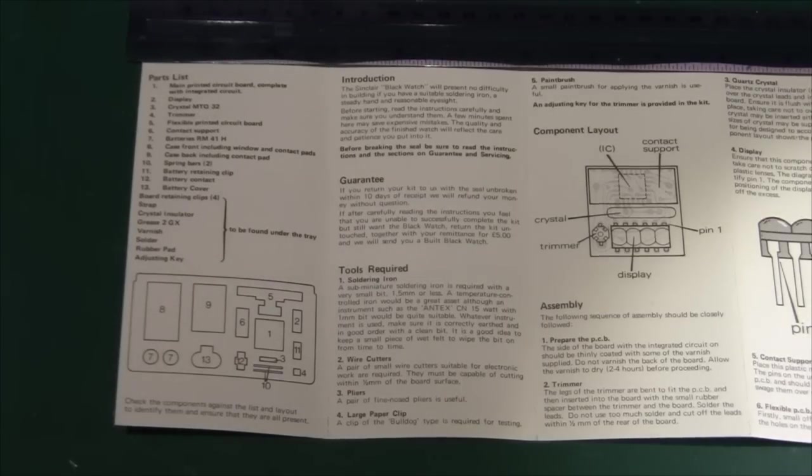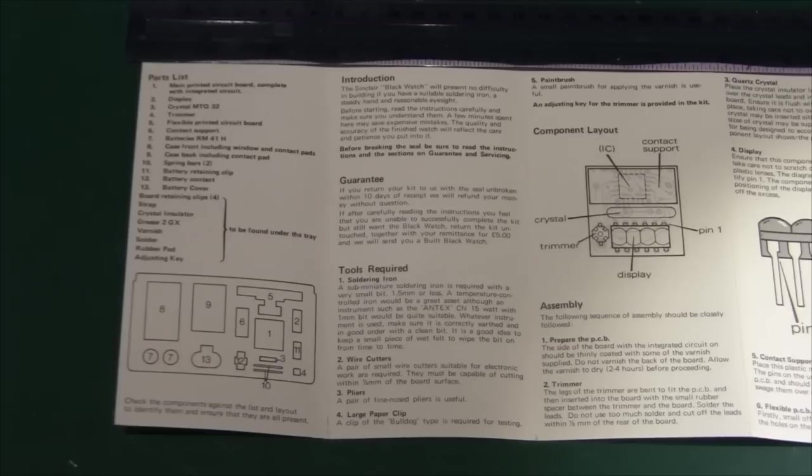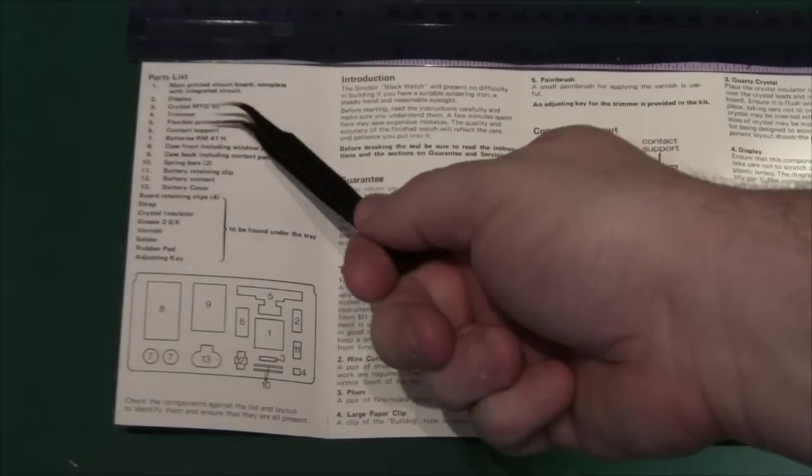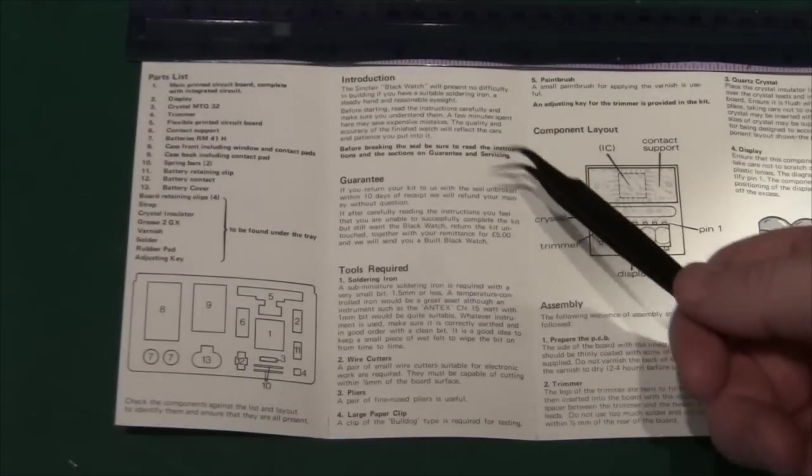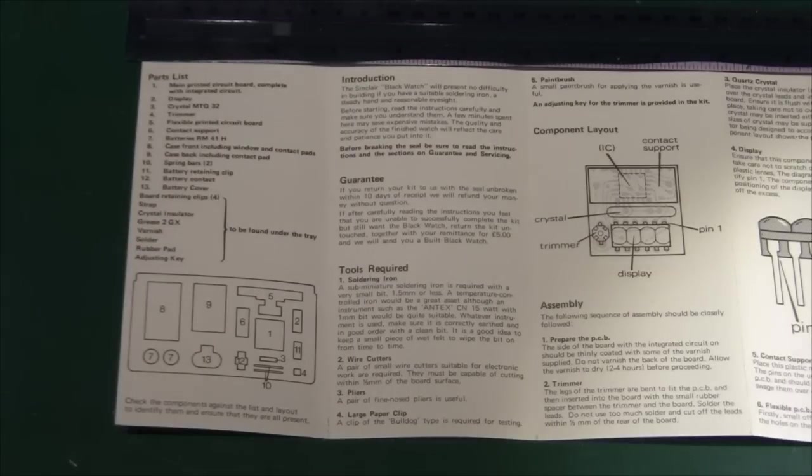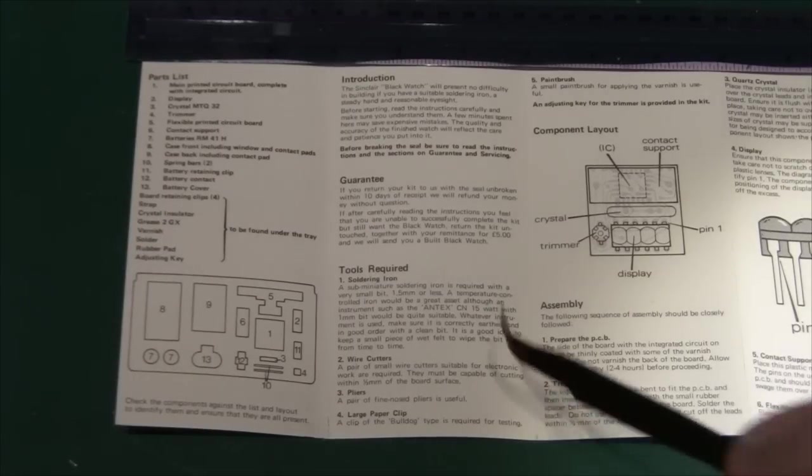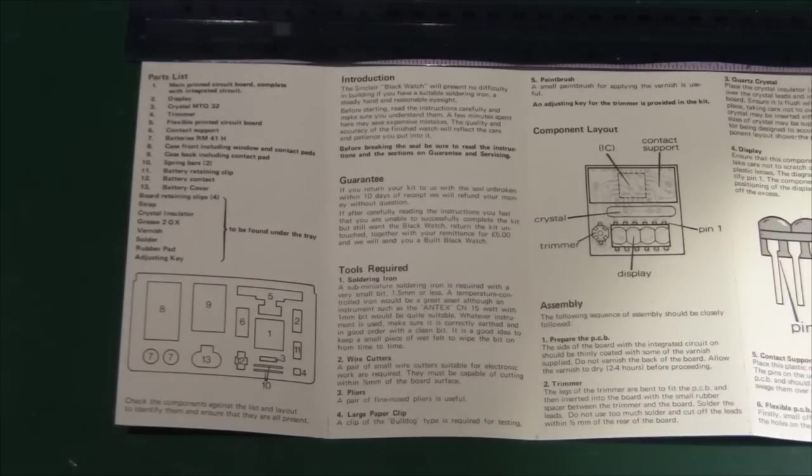Okay, so if we take a look at the instruction manual, it's quite brief. First of all, of course, there's a list of all the components. And I just went through that. Then we have an introduction. Warranty period of 10 days, which is not much. Tools required: soldering iron, wire cutter pliers, a large paper clip you have to supply that yourself, and a small paintbrush because you have to varnish the PCB.